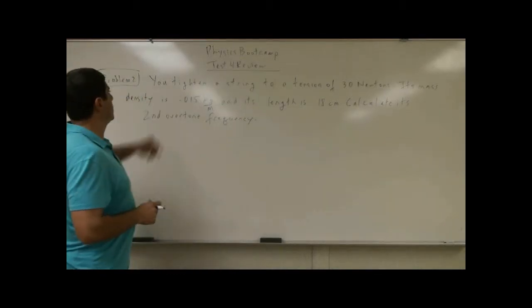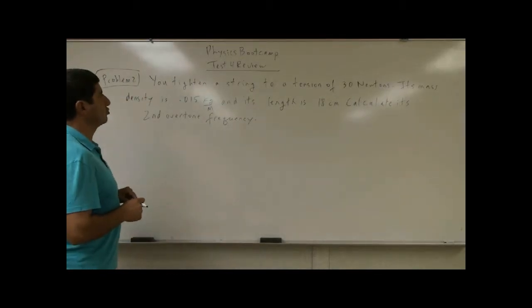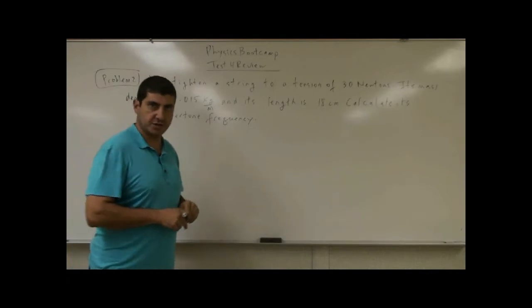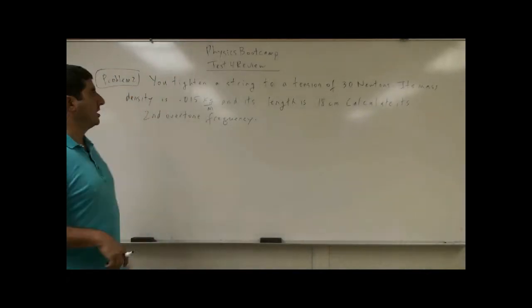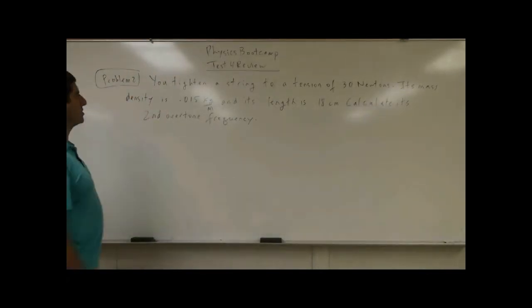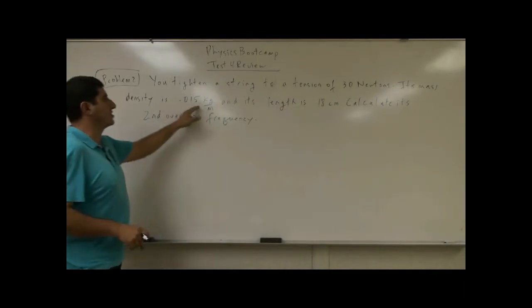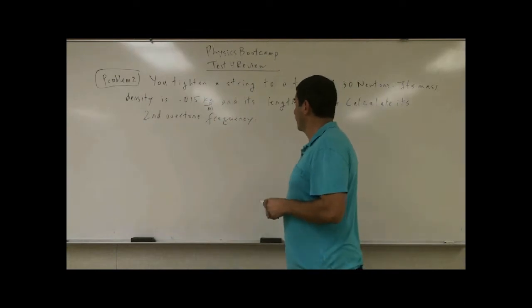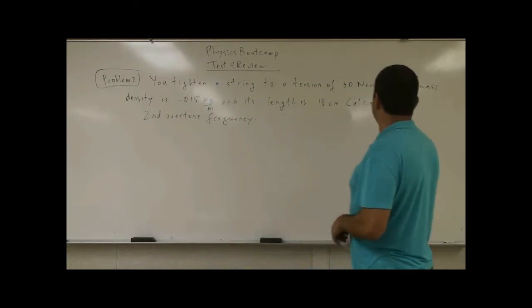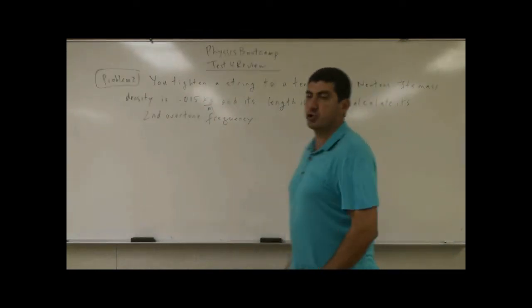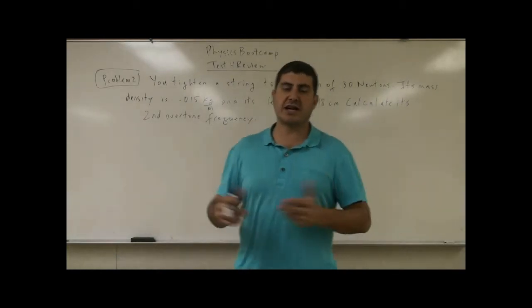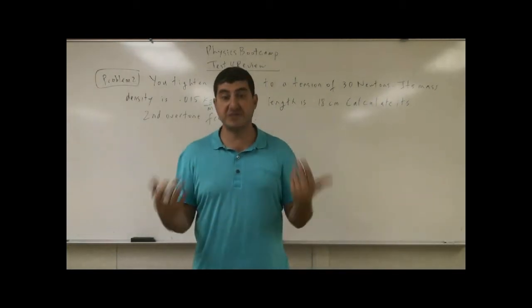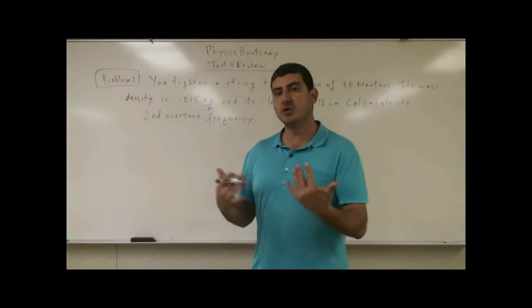Two of the tests for review. You tighten a string to a tension of 30 Newtons. So there's a string here tightened to 30 Newtons. Its mass density is 0.015 kilogram per meter and its length is 18 centimeters. Calculate its second overtone frequency. So this topic has to do with standing waves in strings. Let me give you a little bit of background.